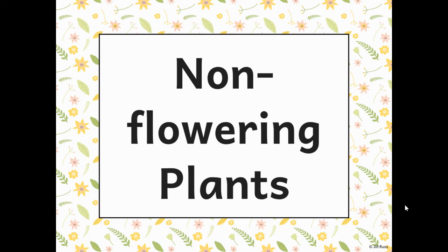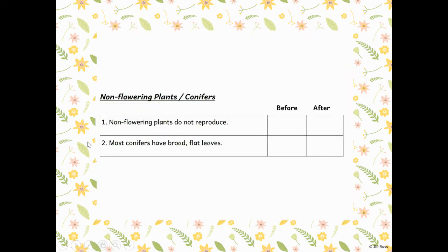Today we're going to talk about those plants that don't make flowers. I am in our plant reading packet on page 73 and in my plant question packet on page 85. We're going to start like we do every time with true/false questions to get our brain thinking. Our first statement says: non-flowering plants do not reproduce — remember, reproduce means makes a new plant. Do you think that's true or false? Our second statement says most conifers have broad flat leaves. Think about what we know about conifers.